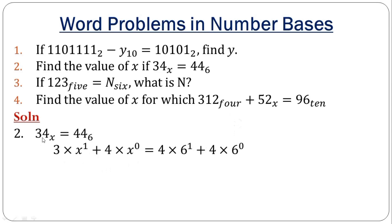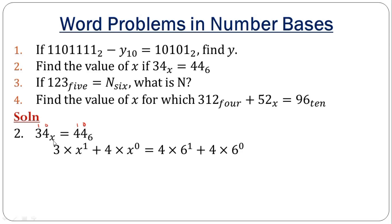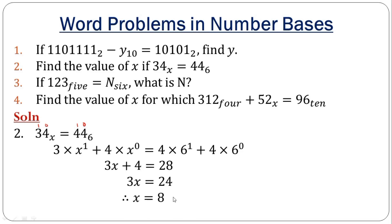For example 2, they ask us to find the value of x, which is an unknown base. Convert everything to base 10, then solve for x. Take the left-hand side and do the expansion: number each digit position starting from 0 on the right. Pick each digit and multiply by x raised to the power of its position. After expanding, x raised to the power 1 is x; multiply by 3 to get 3x. The right-hand side: 1 times 4 is 4, and 6 times 4 is 24, giving 4 plus 24 equals 28. Solving: 28 minus 4 is 24, divide both sides by 3, giving x equals 8.